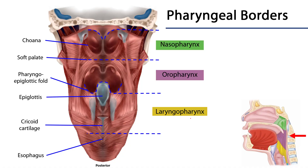This is a posterior view of the pharynx which has been cut open to reveal the inside. We can see the soft palate, which divides the nasopharynx above from the oropharynx below. Here are the choanae, here is the epiglottis, and here is the pharyngoepiglottic fold. Anterior to this will be a portion of the oropharynx called the fossae, and beyond the palatoglossal fold will be the oral cavity proper.